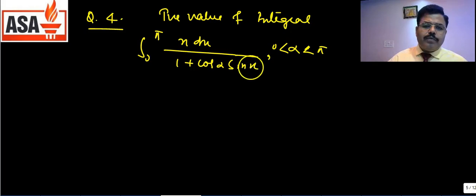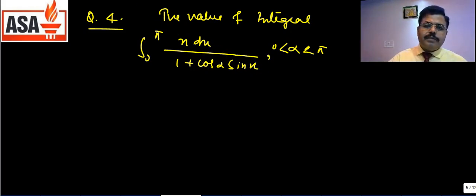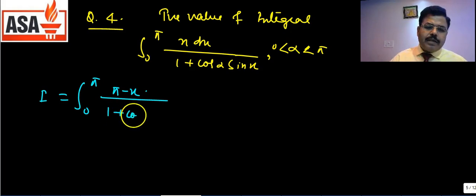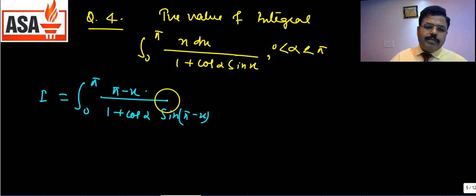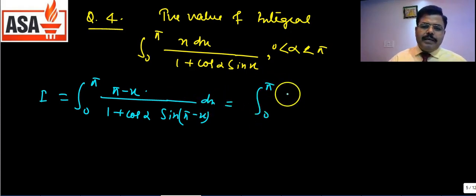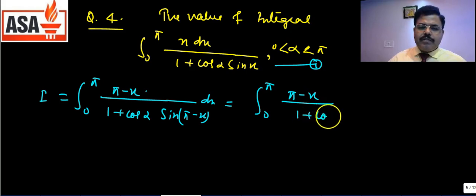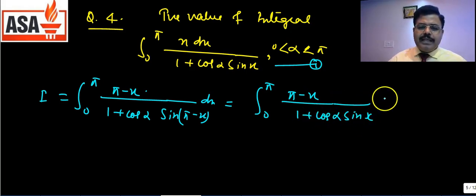To solve this, we apply the property of replacing x with (π − x): I = ∫₀^π (π−x)/[1 + cosα·sin(π−x)] dx. Since sin(π−x) = sinx, the denominator remains the same. So the numerator changes from x to (π−x) while the denominator stays 1 + cosα·sinx.